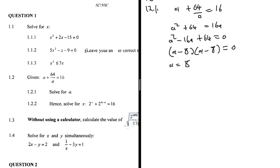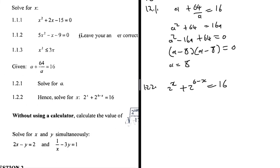Problem 1.2.2 says 'hence solve for x if 2^x + 2^(6-x) = 16.' Because it says 'hence,' I look at 1.2.1 and try to apply the same idea. You could solve it independently, but applying the same approach from 1.2.1 is more efficient.